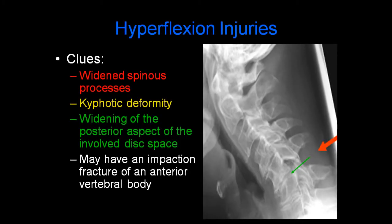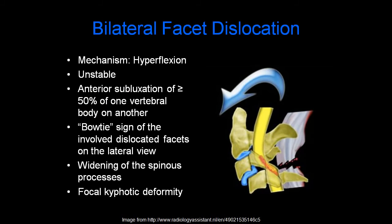Hyperflexion injuries are common, especially with motor vehicle accidents. Clues include widened spinous processes, kyphotic deformity, and widening of the posterior aspect of the involved disc space. There may also be an associated impaction fracture of an anterior vertebral body. Bilateral facet dislocation occurs with hyperflexion, is an unstable injury, and is associated with anterior subluxation of greater than 50% of one vertebral body on another. The bowtie sign of the involved dislocated facets is seen on the lateral view, along with widening of the spinous processes and a focal kyphotic deformity.